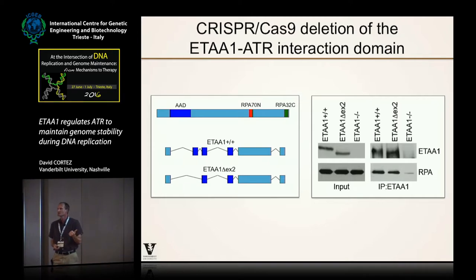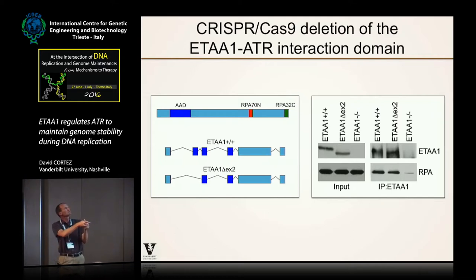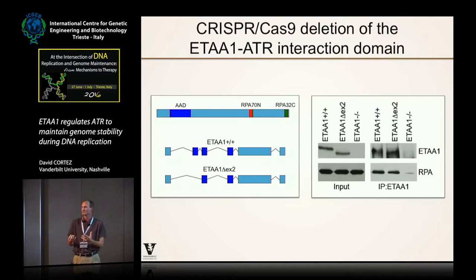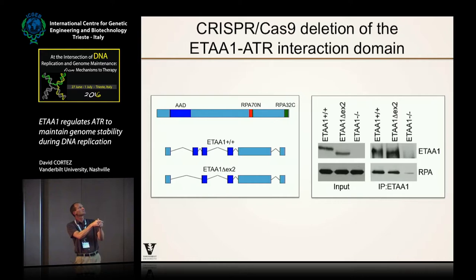My student noticed that the putative ATR activation domain of ETAA1 at the N-terminus is encoded largely by three exons of the gene. Fortunately, that tryptophan is in exon 2, and exons 1 and 3 are capable of splicing together in-frame to make a protein that deletes exon 2. So we targeted this splice junction to delete exon 2, creating a version of ETAA1 missing that tryptophan. It makes a smaller version of ETAA1 expressed from the endogenous locus, allowing us to ask what the function of that ATR activation domain is in cells. We also use ETAA1 null cells as a comparison.